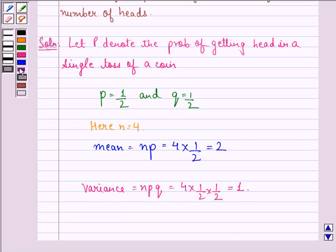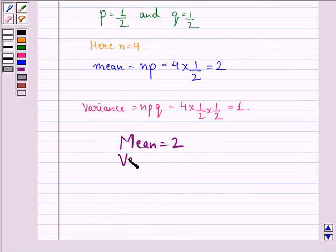So our answer to this question is that mean is equal to 2 and variance is equal to 1.